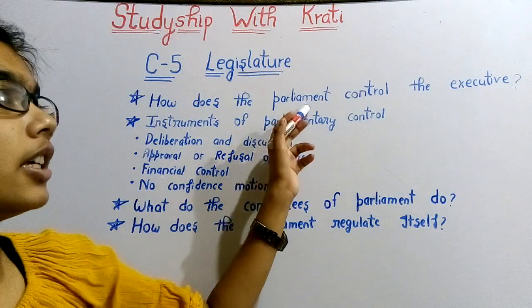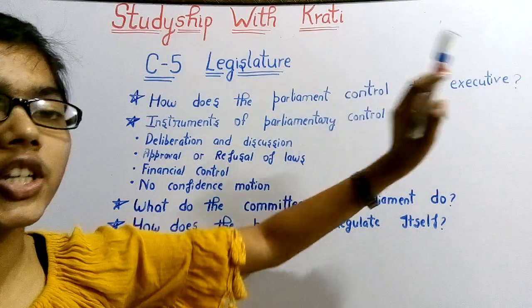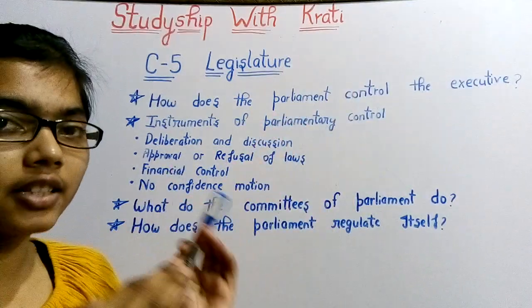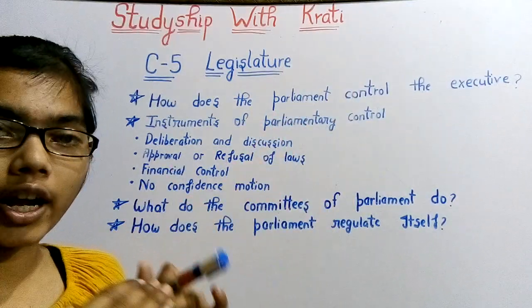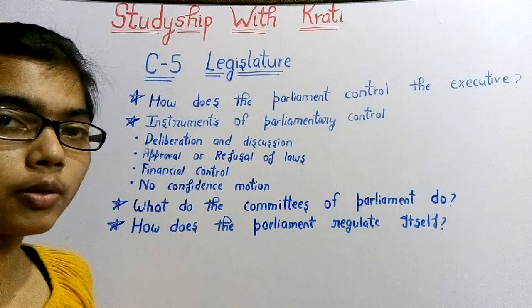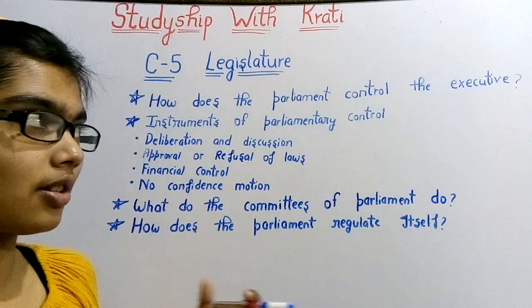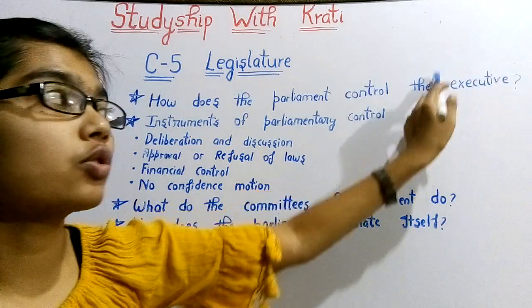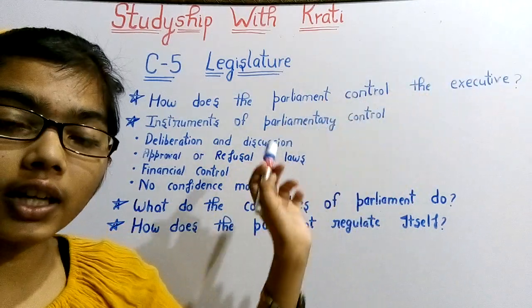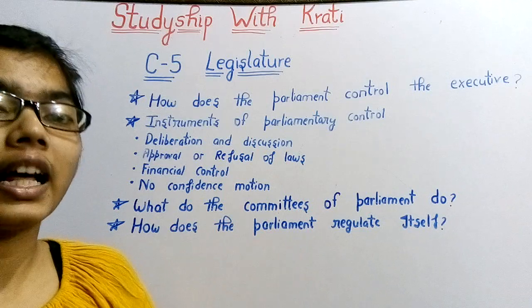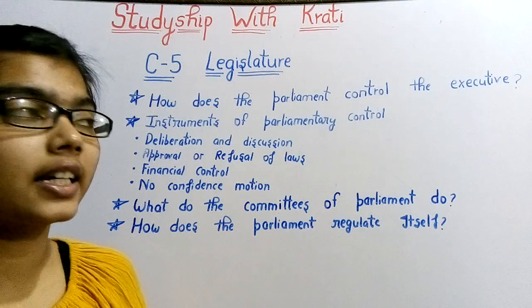The two — Parliament and the executive — are working in coordination. The Legislature makes rules and regulations, and the executive is the body that implements them.